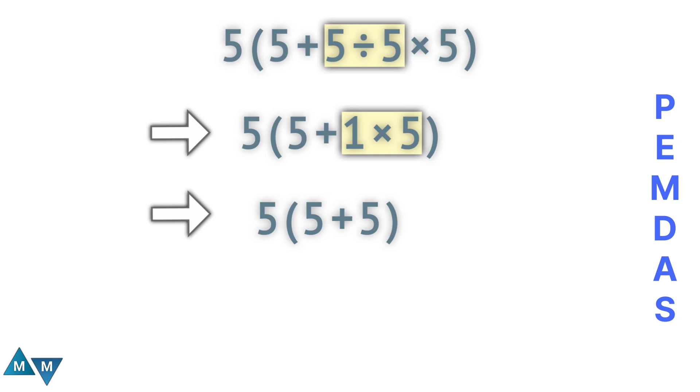Again, we're still working inside the parentheses. So we have 5 plus 5, which equals 10. Now, finally, we're done with everything inside the parentheses. So now we can start thinking about the numbers outside of the parentheses.